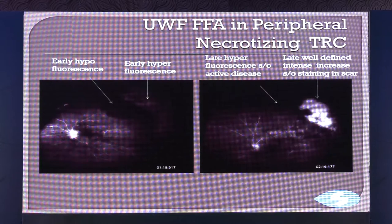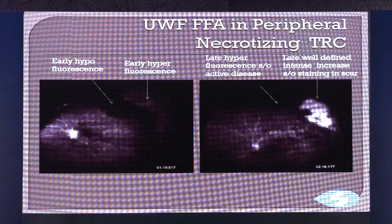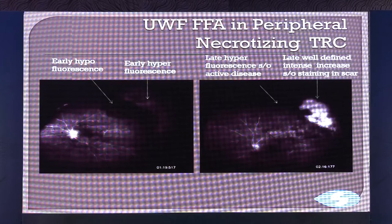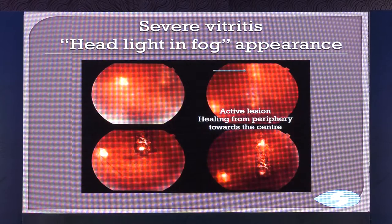The angiogram is helping here — the pattern of angiography leakage is different in the two lesions. On ultra-wide field, you have an area of blocked fluorescence where there is pigmentation, leakage where there is active retinitis, and this helps to differentiate the two conditions.